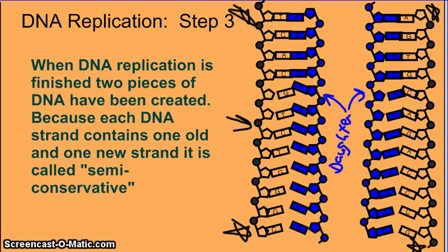Semi means half. Conservative means to conserve, or to keep the same, or to protect. In this case, we have conserved half of the original strand — that's the parent strand, the black strands. But we've only conserved half of it, making it semi-conservative.